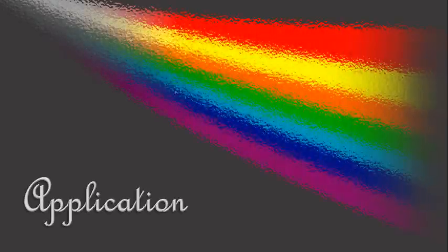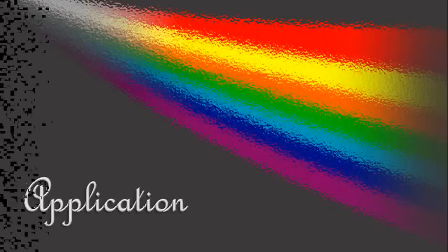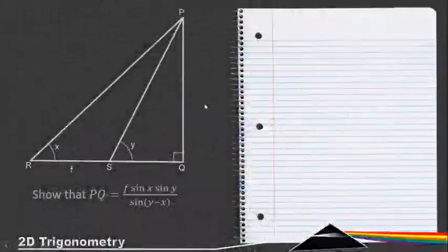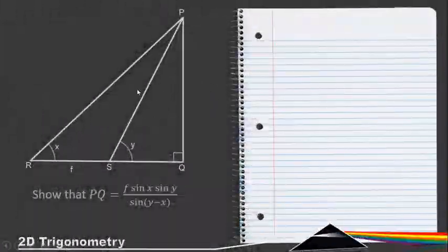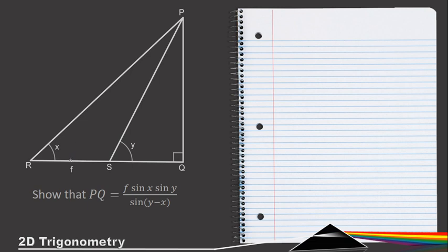Let's look at some applications of the sine and cosine rules. In this triangle we need to show that PQ is equal to f·sin(x)·sin(y) / sin(y - x).